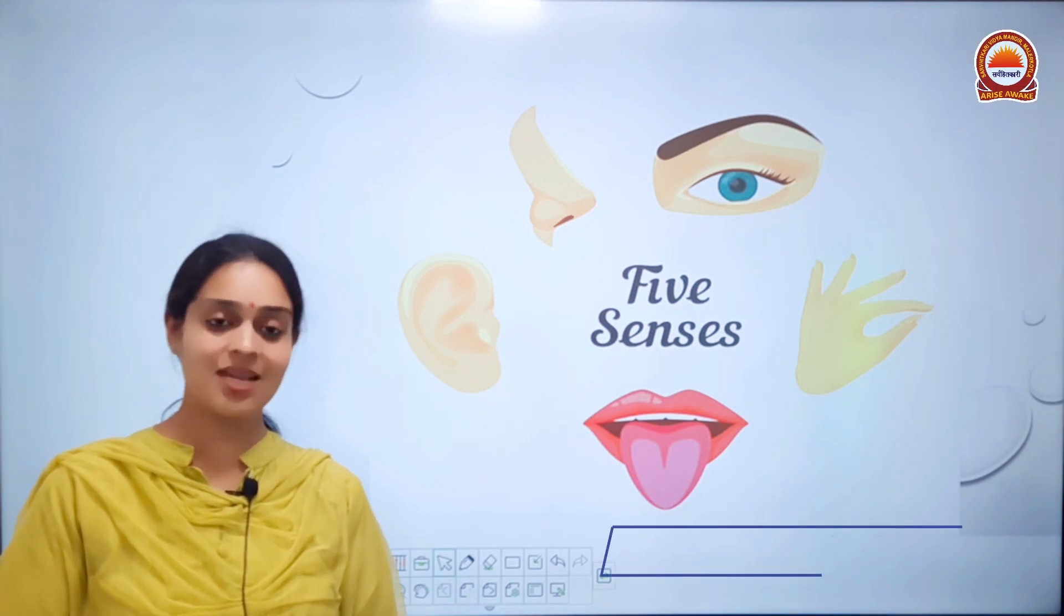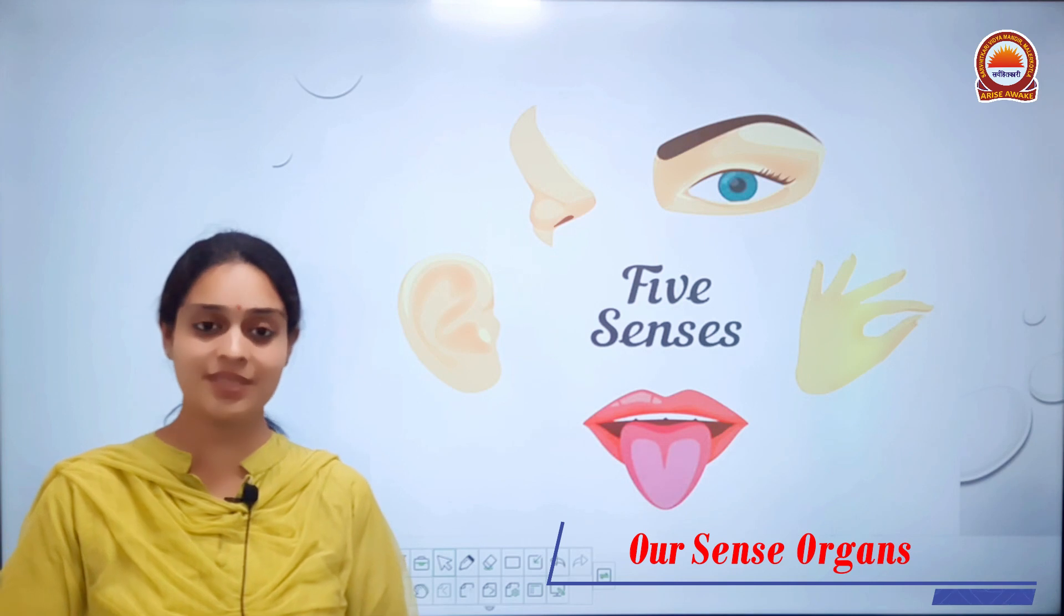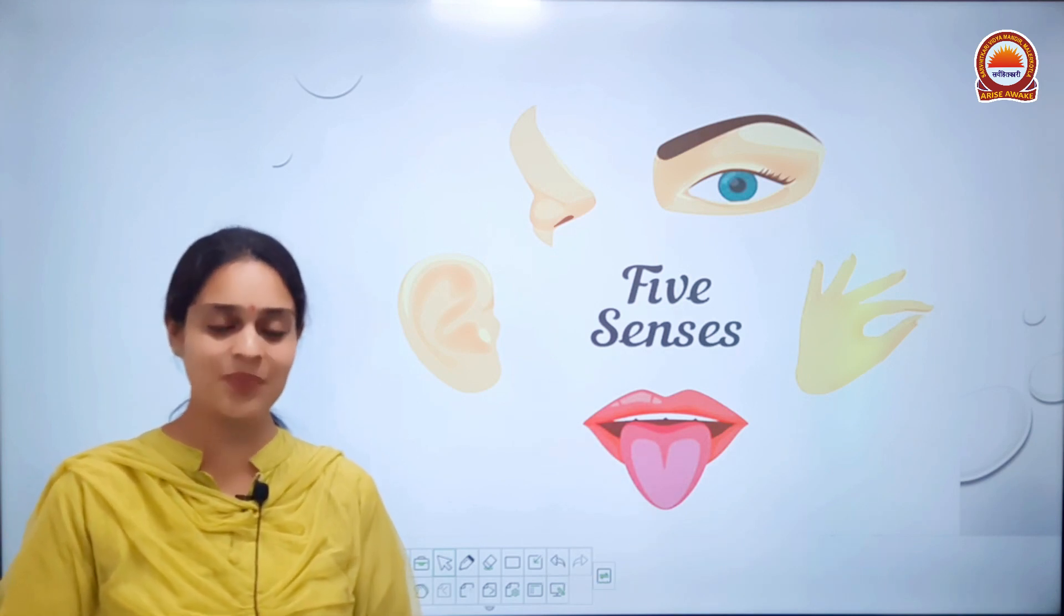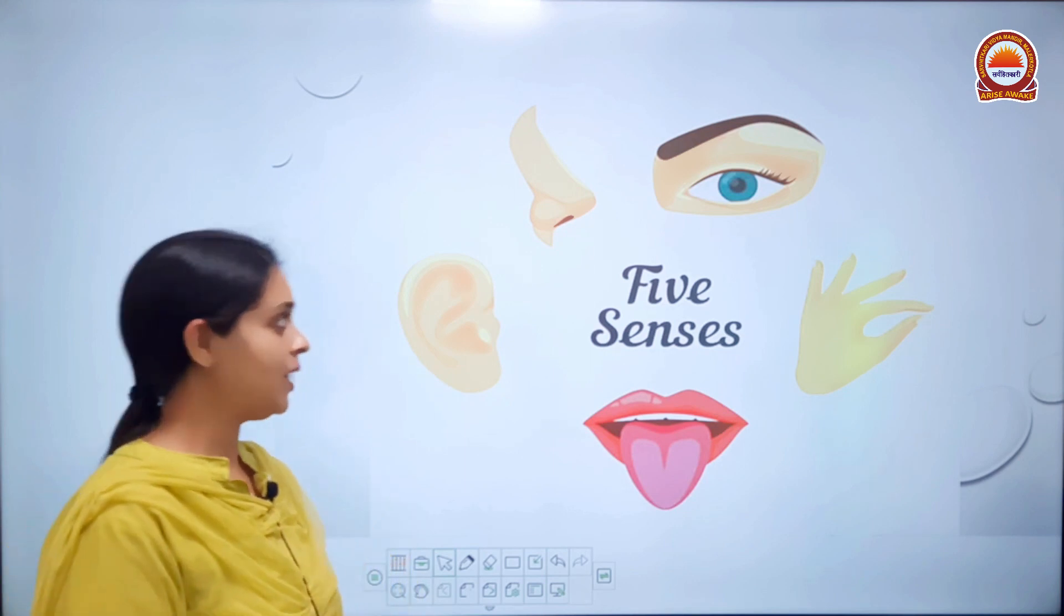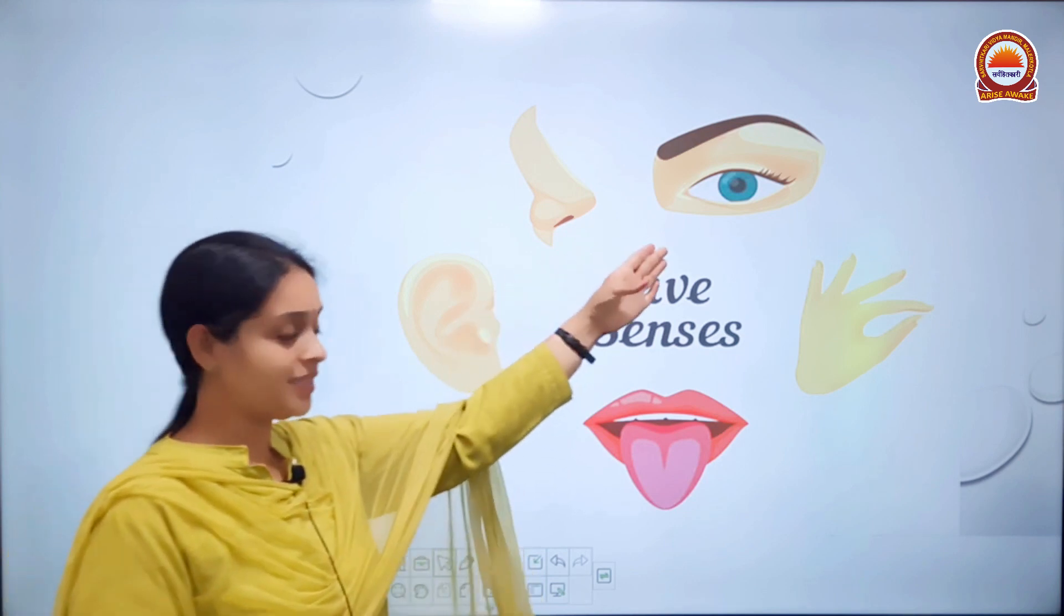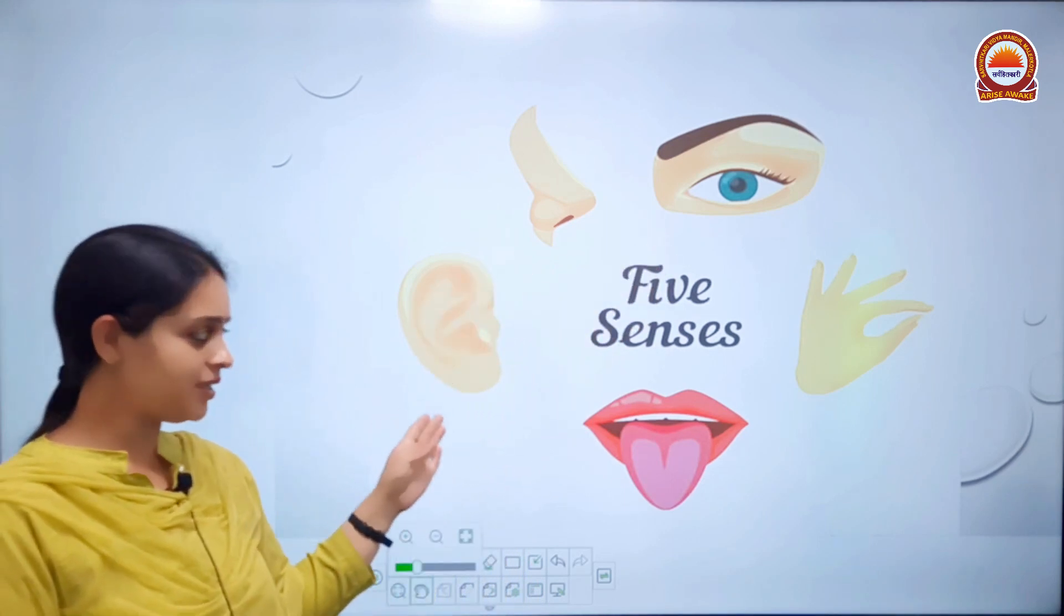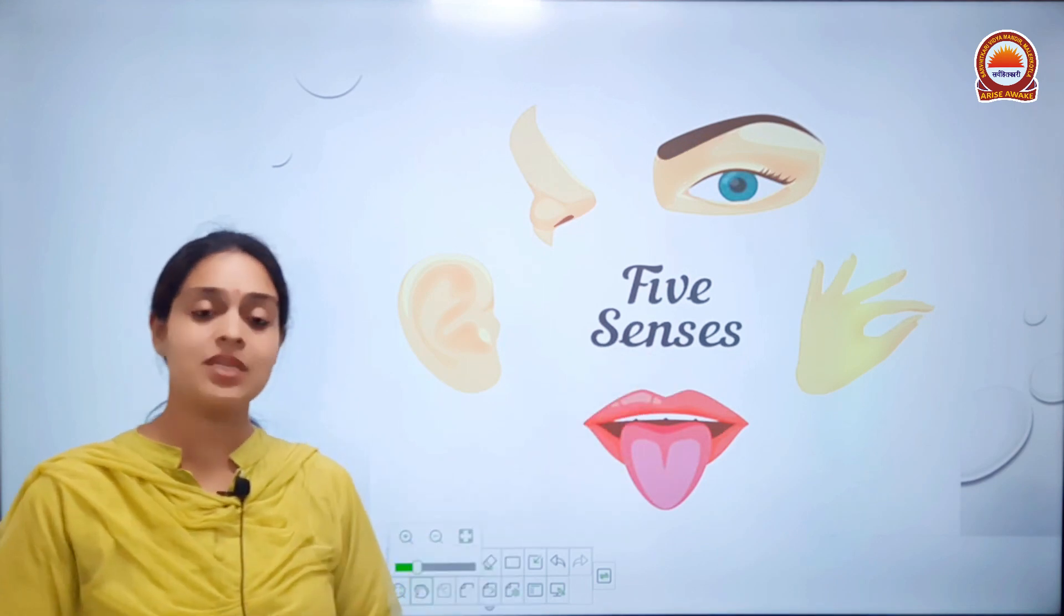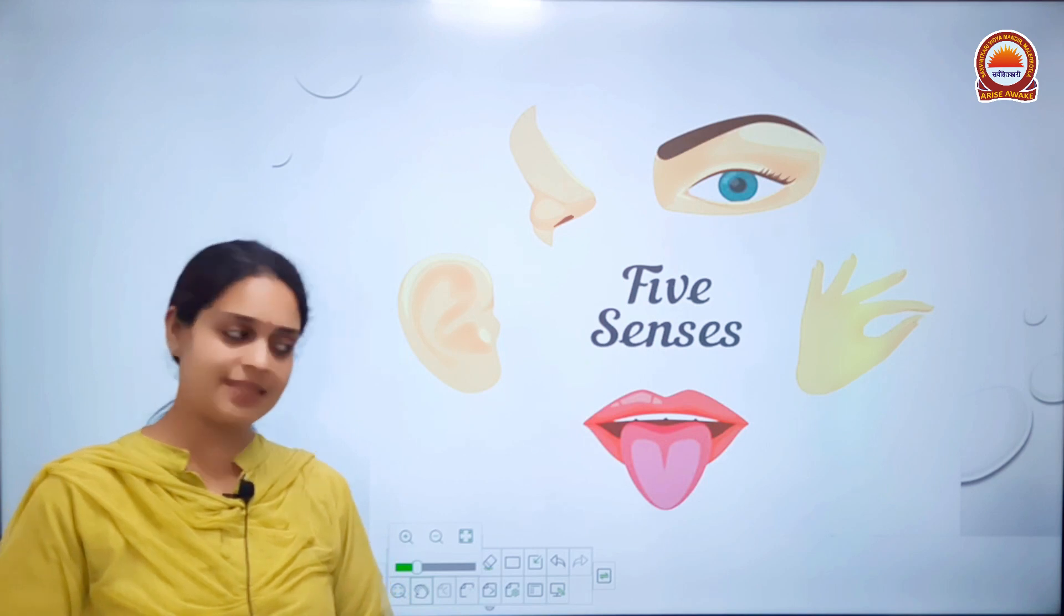Hello dear kids, hope you all are well at home. Students, do you know how many sense organs do we have? Yes, we have five sense organs. Number one: eyes. Number two: nose. Number three: ears. Number four: tongue. And number five: skin. So now we are going to learn about our five senses.